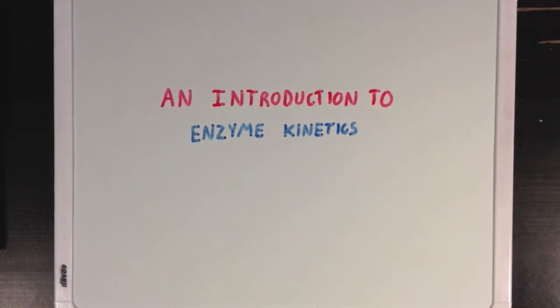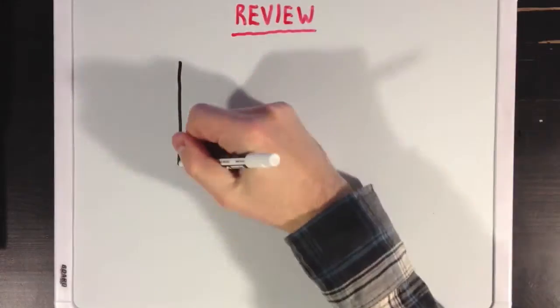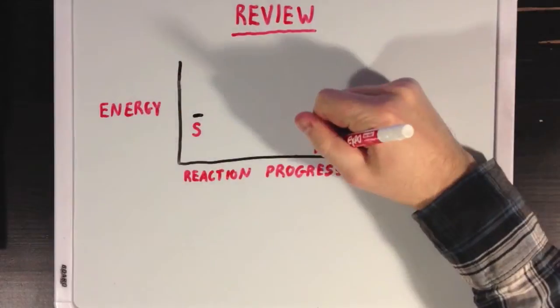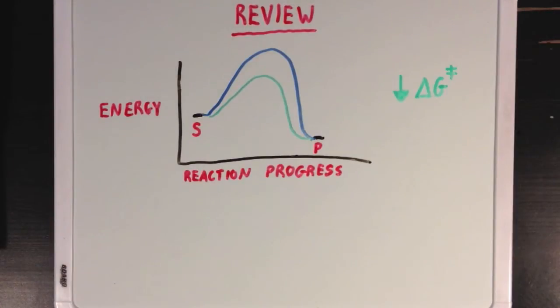We're going to talk about enzyme kinetics today, but first, let's review the idea that enzymes speed up reactions by lowering the delta G of the transition state, or lowering the activation energy of a reaction.